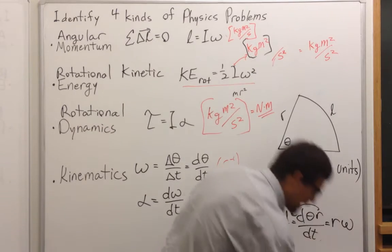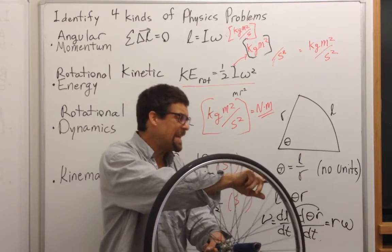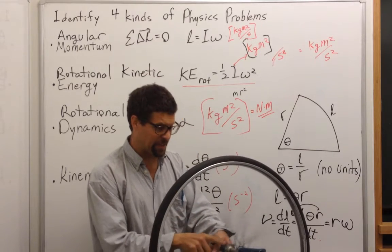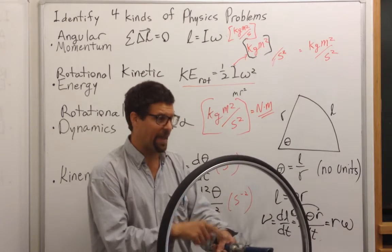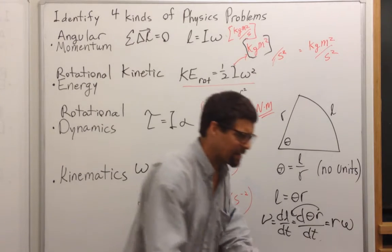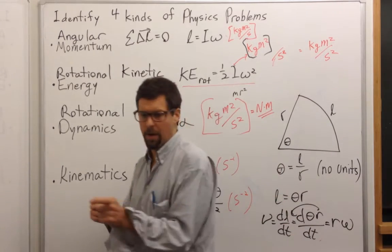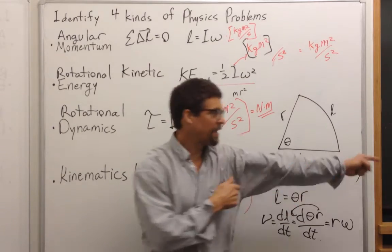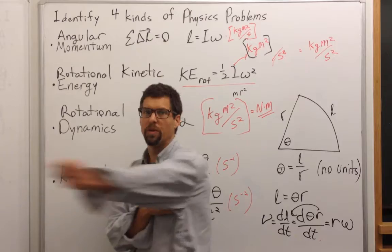And so what that says is that the speed of the rim as I'm turning it is equal to how fast the angle is changing, omega, times the length of the arm. And yes, if I'm rotating around in a circle, we can look at how fast my finger goes. If I lengthen my arm, my finger is moving faster.